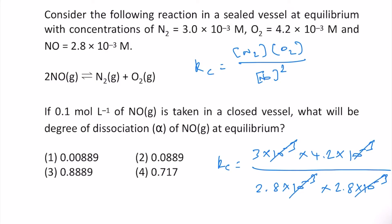All the 10 to the power minus 3 will cancel out. So this is basically 9 by 5.6 which we can write as 90 by 56 and that will be equal to 45 by 28. So Kc is 45 by 28.